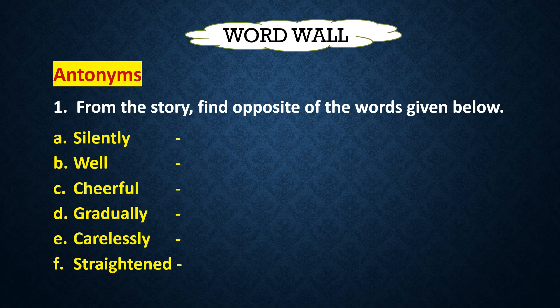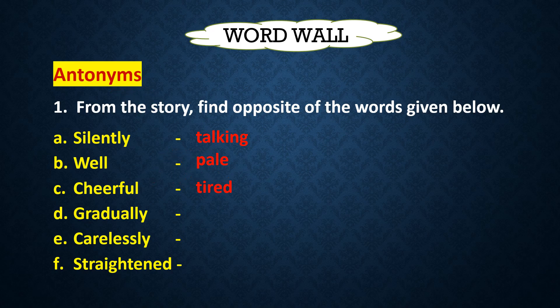The first word is 'silently.' What is the antonym of silently used in the story? The opposite of silently is 'talking.' Next word is 'well.' The opposite of well is 'pale.' Mother was not well — she was looking pale. Now the next word is 'cheerful.' The opposite of cheerful used in the story is 'tired.' The word is tired; it is the opposite of cheerful here.